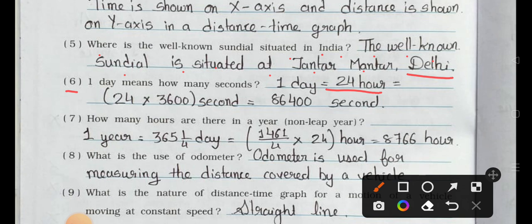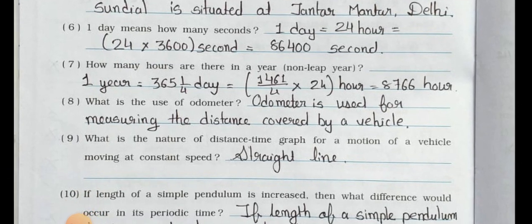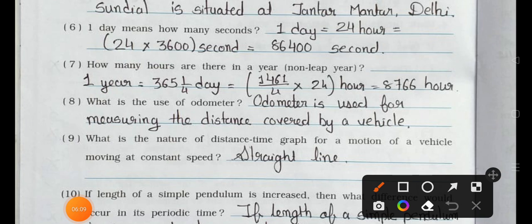Answer is: one day is equal to 24 hour, so is equal to 24 multiply by 3600 in seconds, so we get 86,400 seconds.